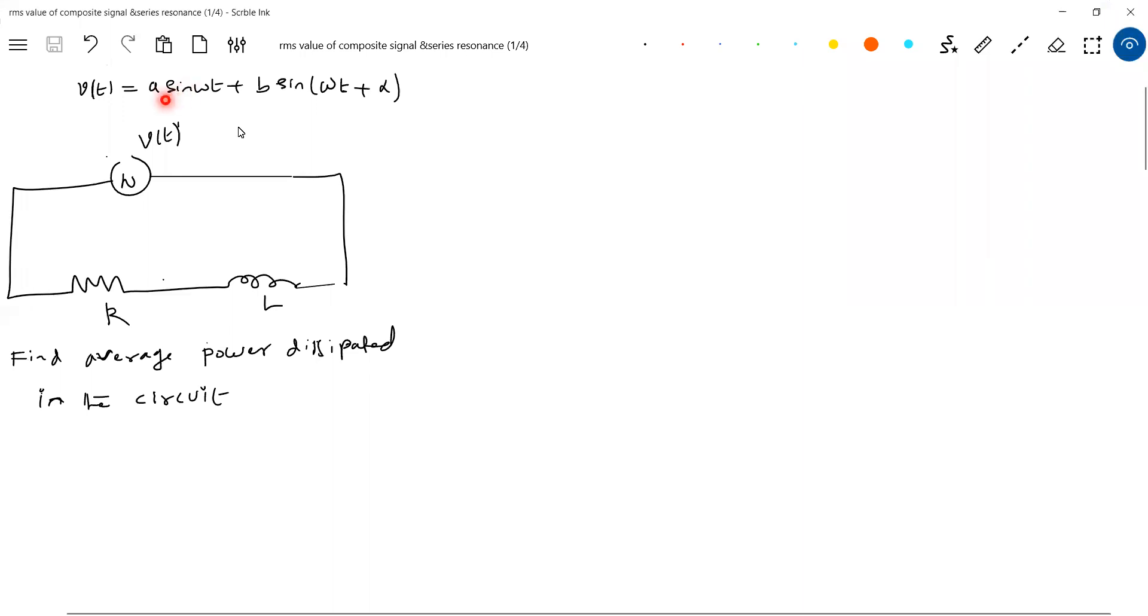Now look at this signal A sin omega t plus B sin omega t plus alpha. So what we should calculate? We should find out the VRMS of this one. And what is the phase angle of the given signal? We know how to calculate VRMS. We were not aware of that particular phase angle of the signal.